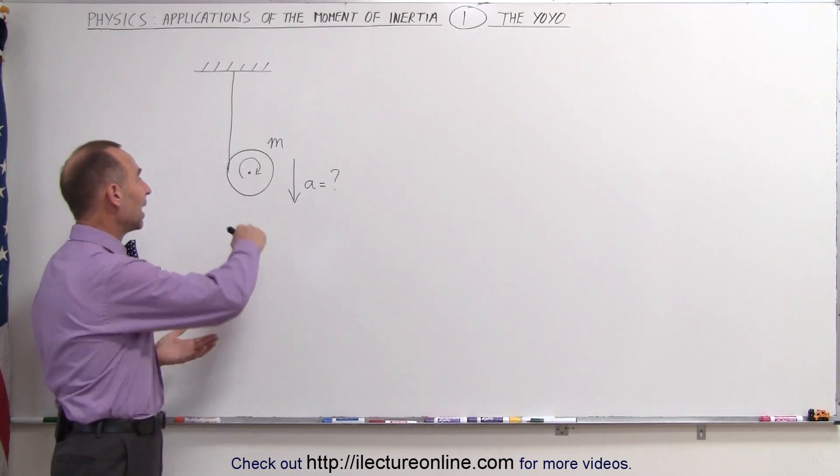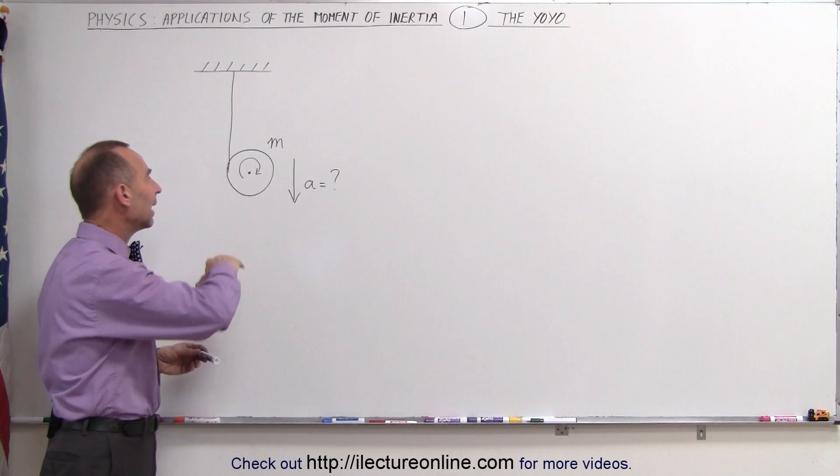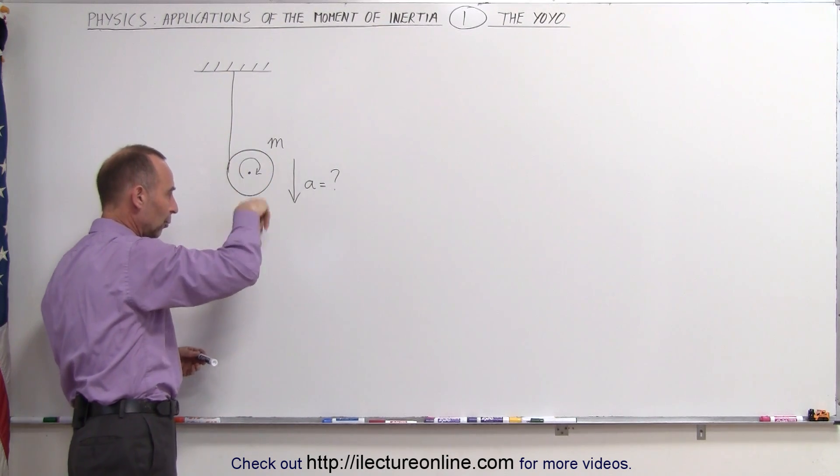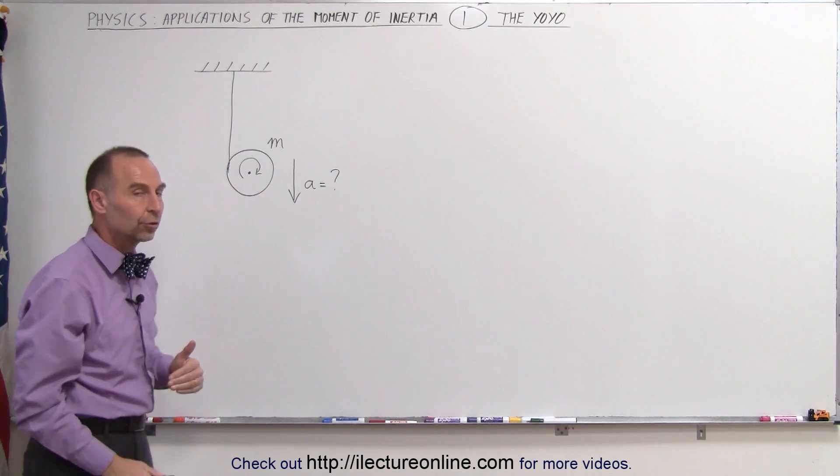Here we have the yo-yo. We have a disc, a solid disc with mass m, and it's hanging on a string and the yo-yo is rolling down and we want to know what the acceleration is of the yo-yo in the vertical direction.